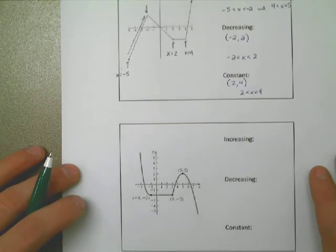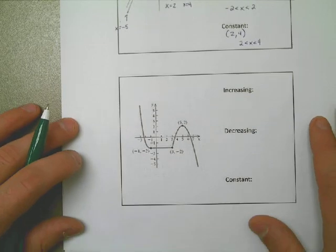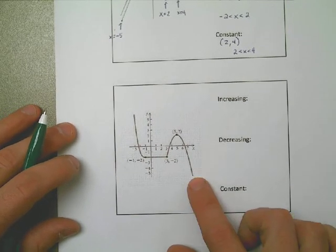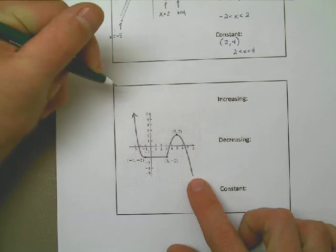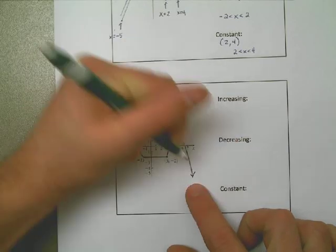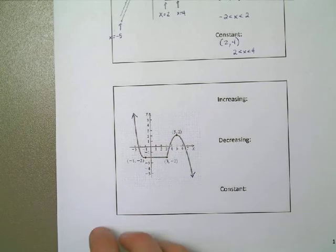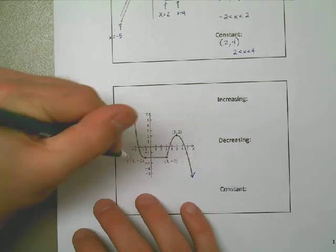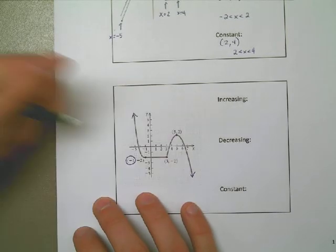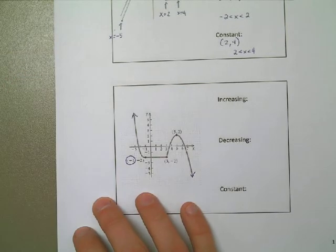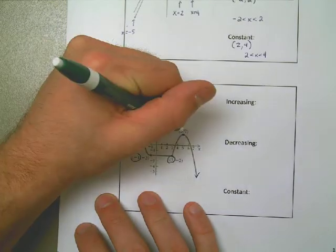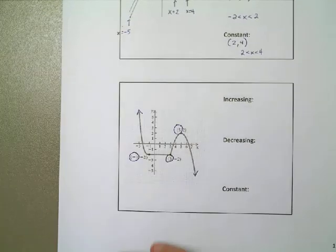Let's take a look at one more graph. Notice there are no dots on the end. If there are no dots or you see arrowheads on the end, we're going to assume that the graph goes on forever. It looks like they've already pointed out some key points, but we're only interested in these x-coordinates: negative 1, positive 3, and positive 5.